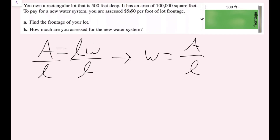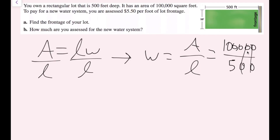Now I'll plug in my values. The area is 100,000 square feet, and the length — the depth — is 500 feet. So this is 100,000 over 500. I'm going to cross out some zeros: I have 1,000 divided by 5, and that's going to be 200. So my width equals 200 feet.